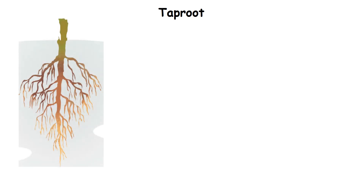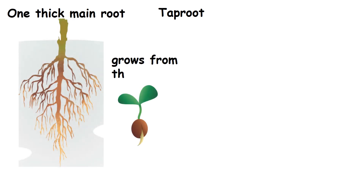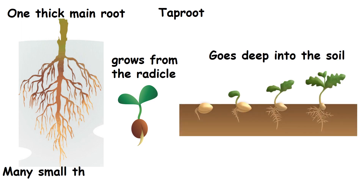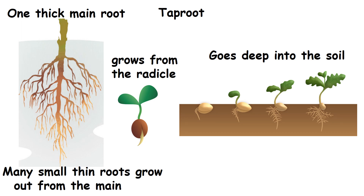Taproot. Taproot has one main thick root. It grows from the radical in the seed and goes deep into the soil. Many small thin roots grow out from the main root.